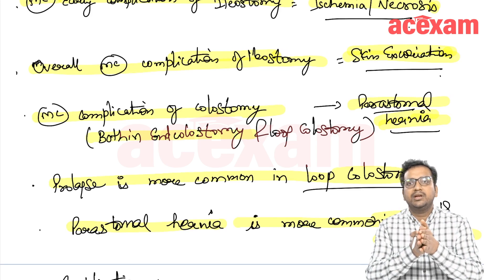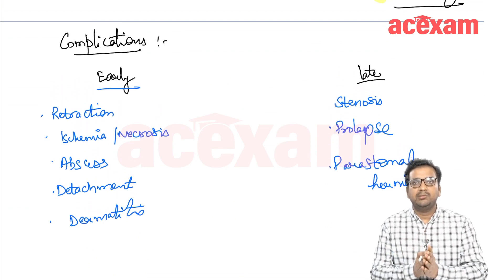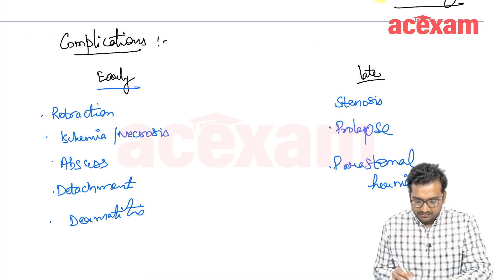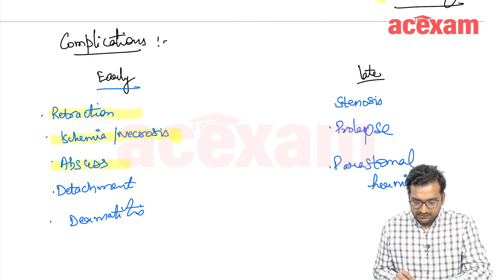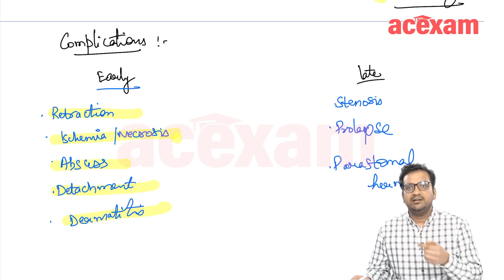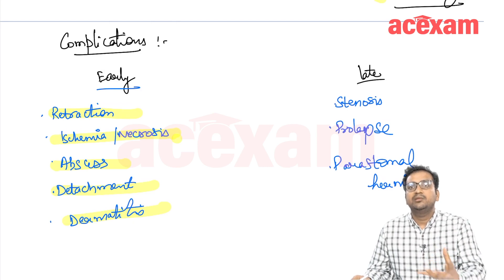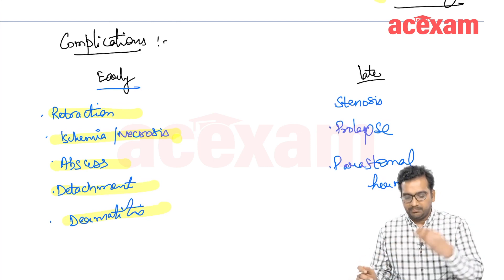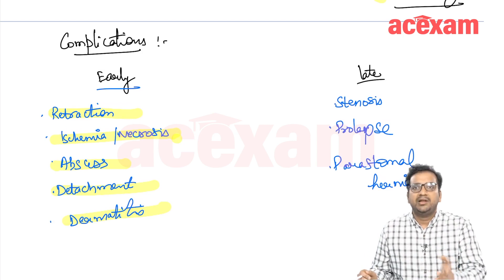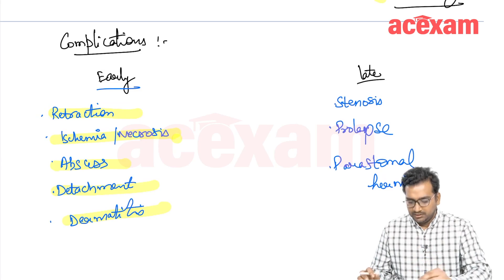Overall, early complications of stoma include retraction, ischemia, necrosis, abscess, detachment, and dermatitis. Necrosis is the most common early complication of ileostomy. Late complications include stenosis, prolapse, and parastomal hernia. Parastomal hernia is the most common complication of colostomy overall.